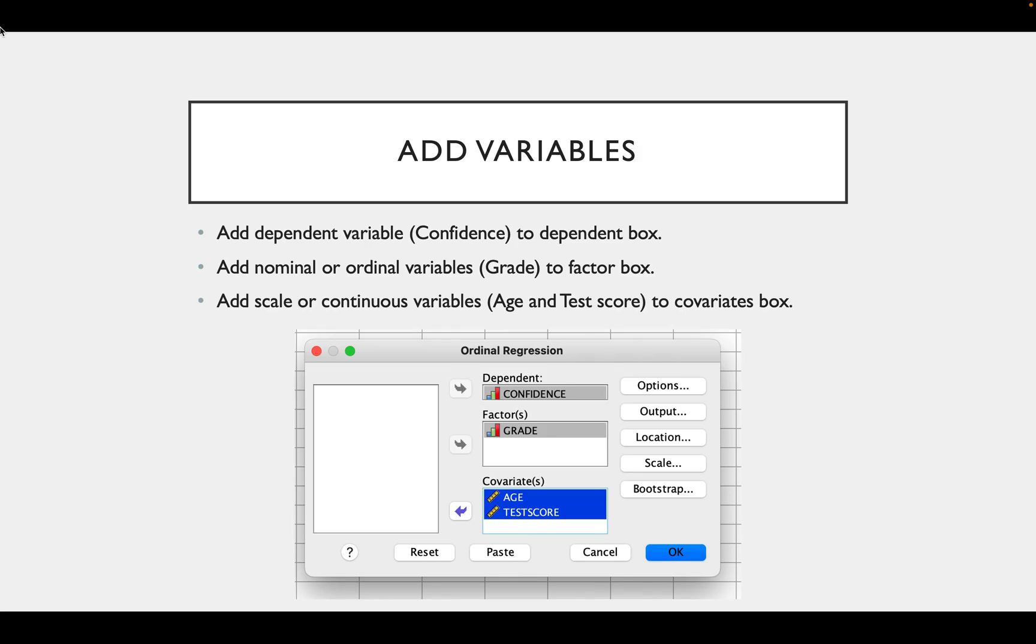Then you need to add your variables. So you add your ordinal dependent variable to the dependent variable box. So in this case, confidence. Then you add any nominal or ordinal independent variables to the factor box. So in this case, grade. And then you add any scale or continuous independent variables to the covariate box. So in this case, we have age and test score.